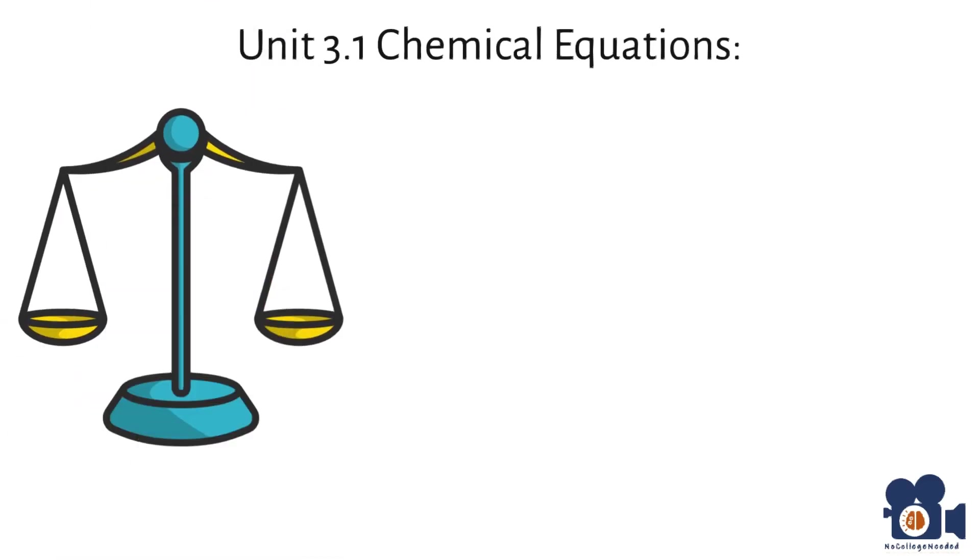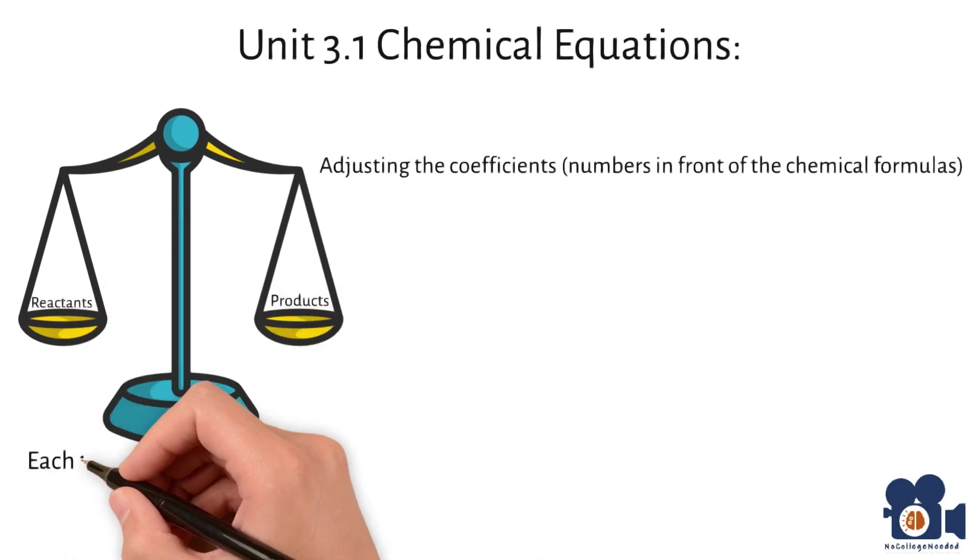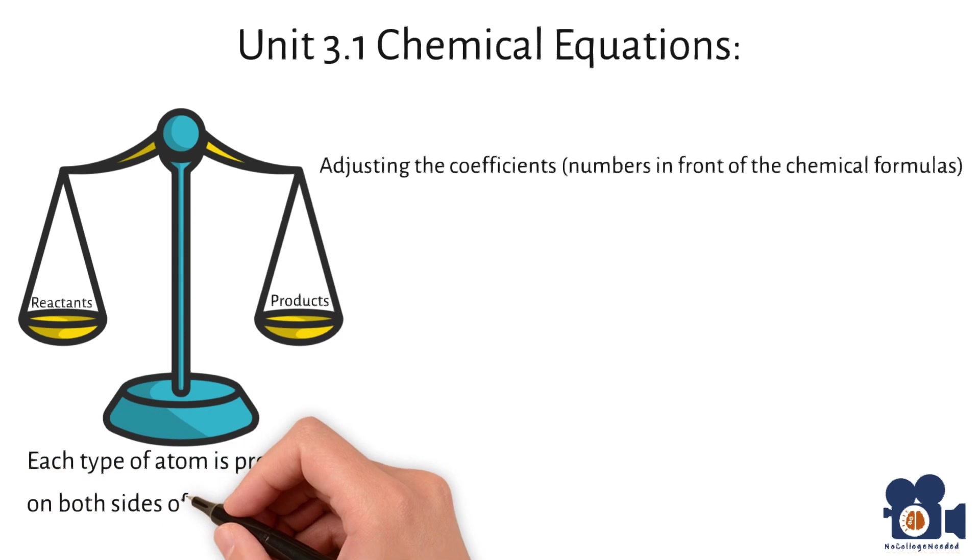Balancing a chemical equation in chemistry involves adjusting the coefficients, numbers in front of the chemical formulas of the reactants and products so that the same number of each type of atom is present on both sides of the equation.